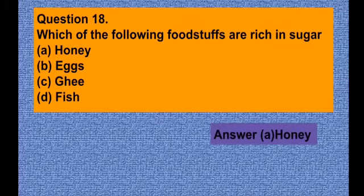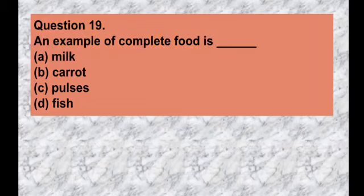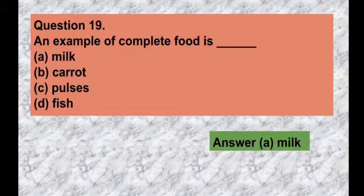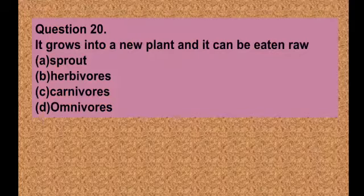Question number nineteen: An example of a complete food is — option A milk, option B carrot, option C pulses, option D fish. The correct answer is option A — milk is known as a complete food.